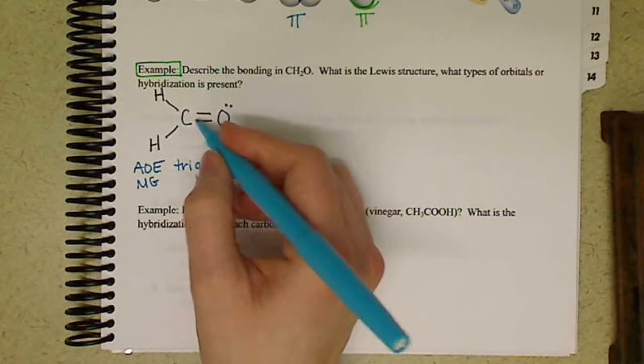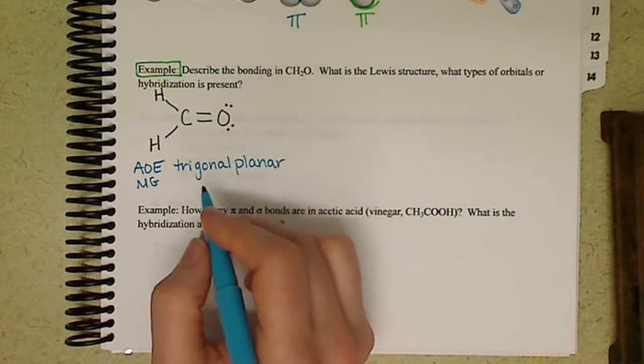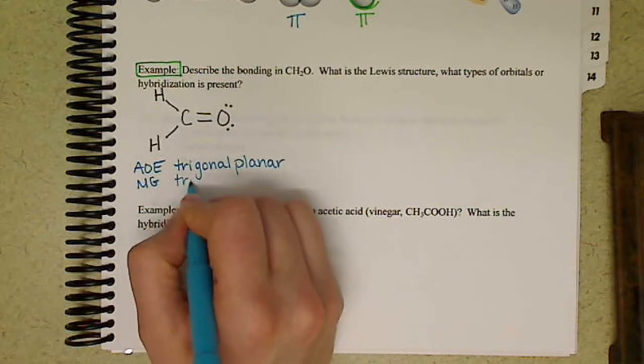The molecular geometry, we have three atoms there. We don't have any lone pairs on the central atom, so our molecular geometry will stay the same.